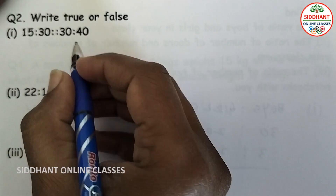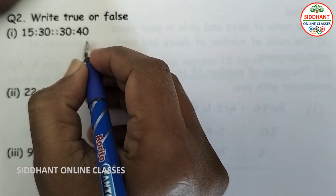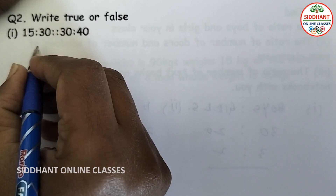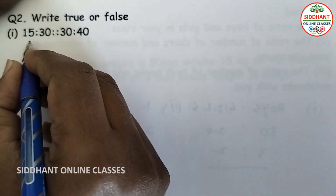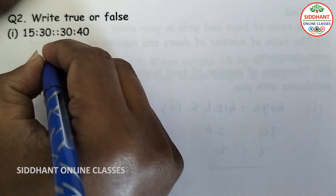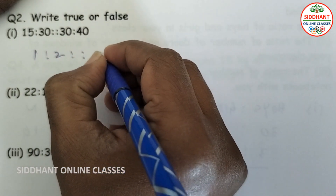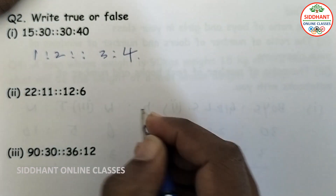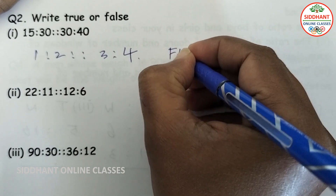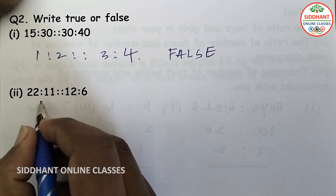Question number 2: Write true or false. First proportion: 15 is to 30 and 30 is to 40. Simplifying, 15 to 30 gives 1 is to 2, and 30 to 40 gives 3 is to 4. The ratios are not the same, so the statement is false.